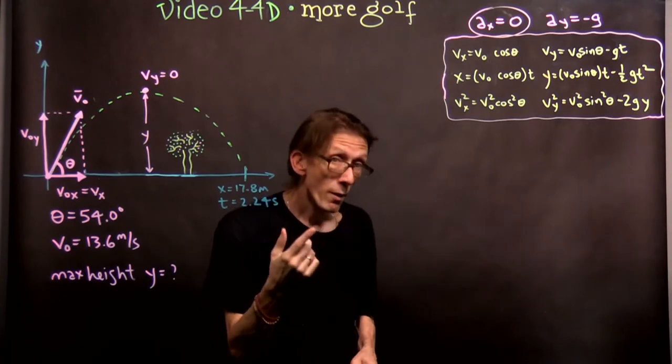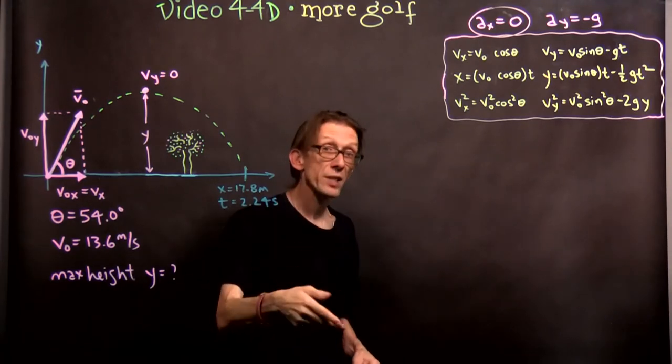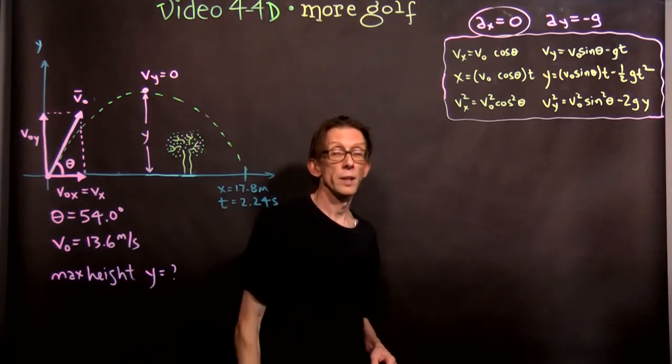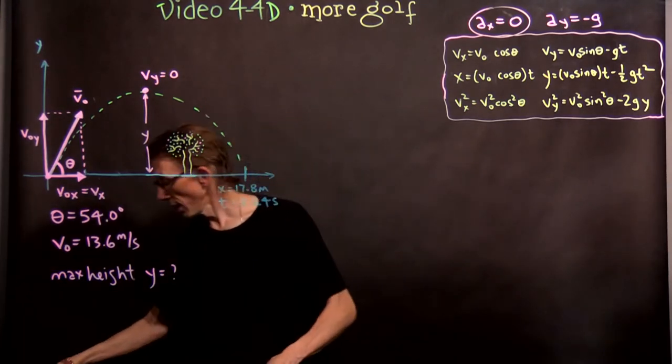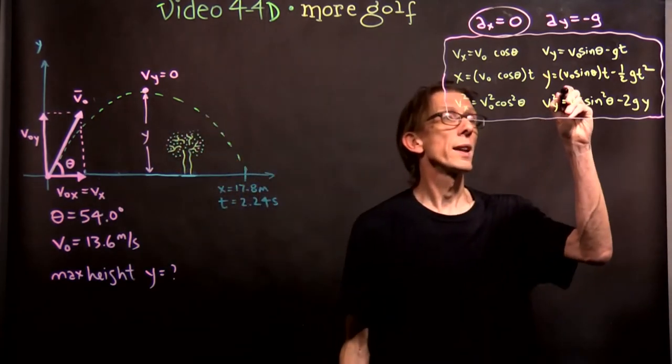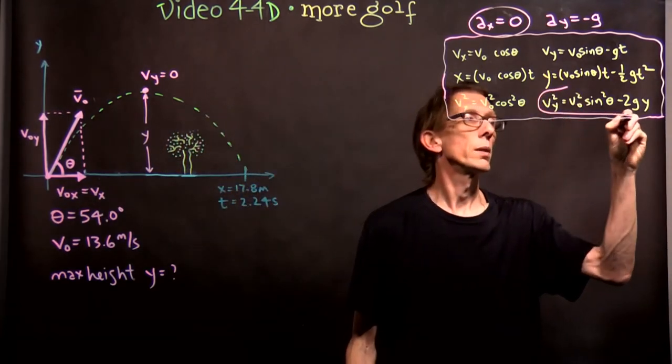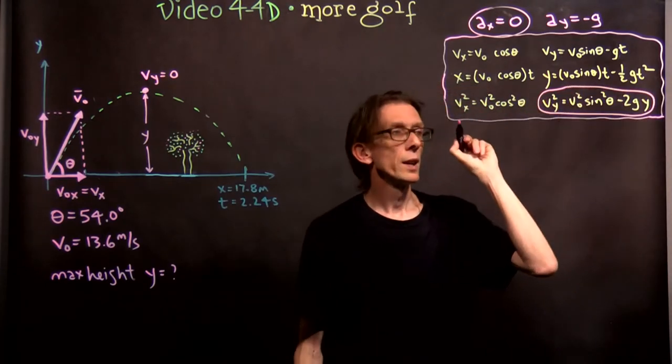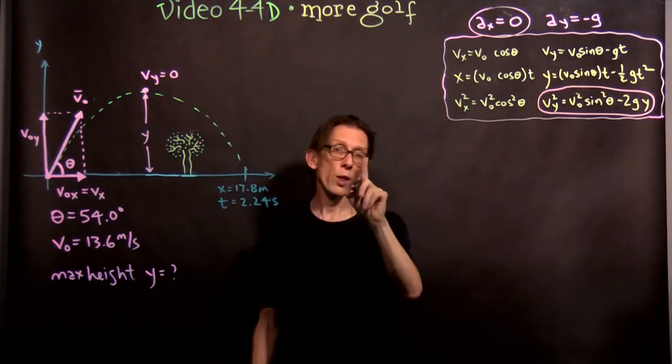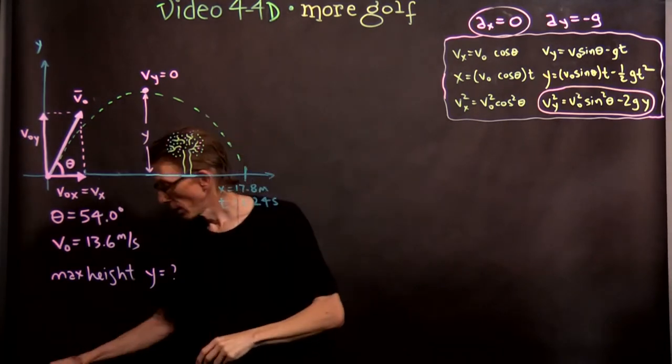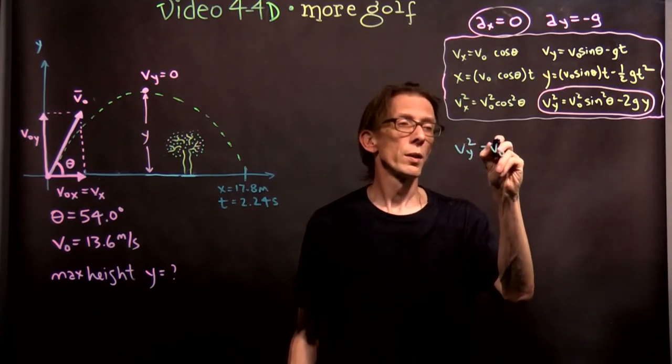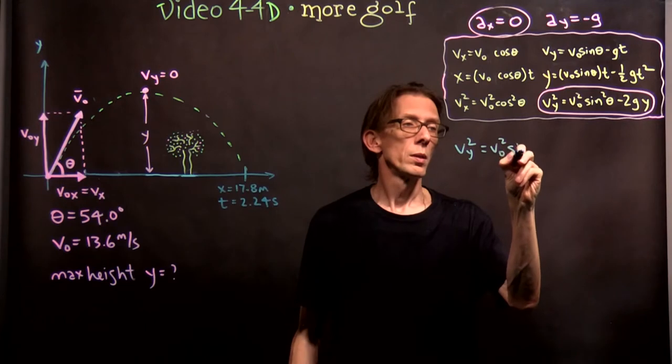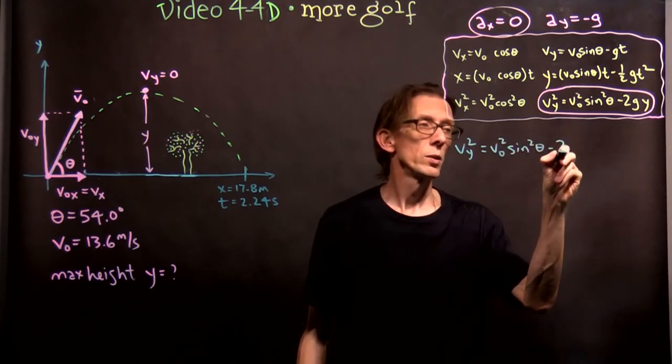So if we know the initial velocity, the final velocity in the y-direction, and we're looking for the value of y, then one equation in particular jumps out, and that is number three right here. It's got everything we know except for the one thing we're looking for. Let's write it again.